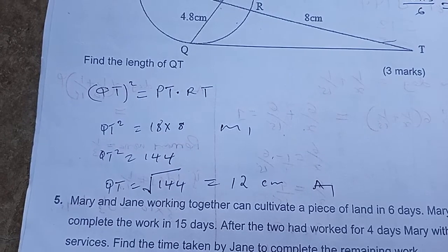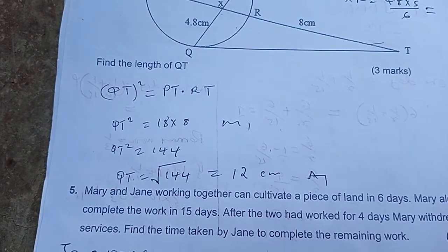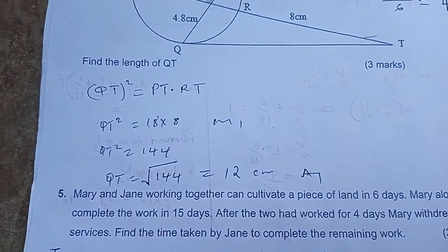So we have QT squared is 144, and therefore, QT is the square root of 144, which is 12 centimeters.